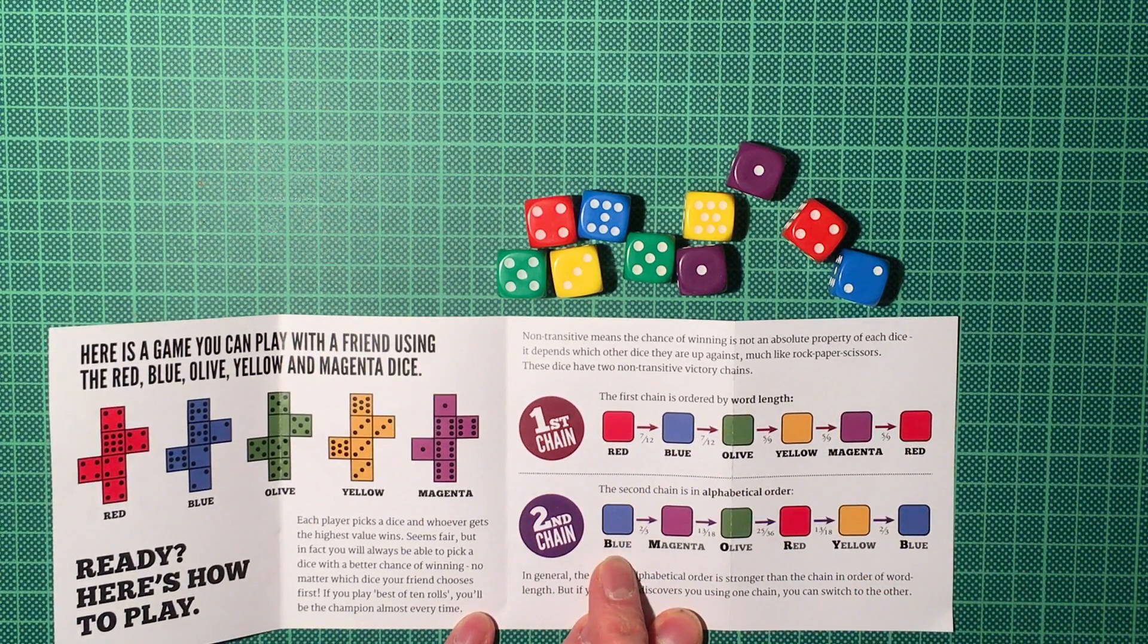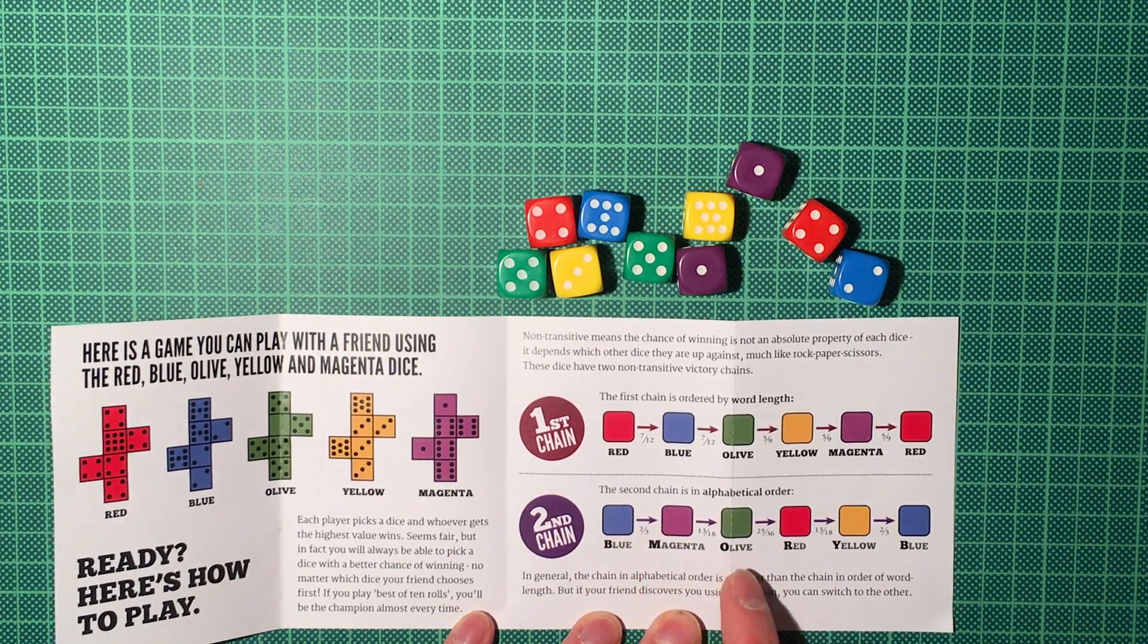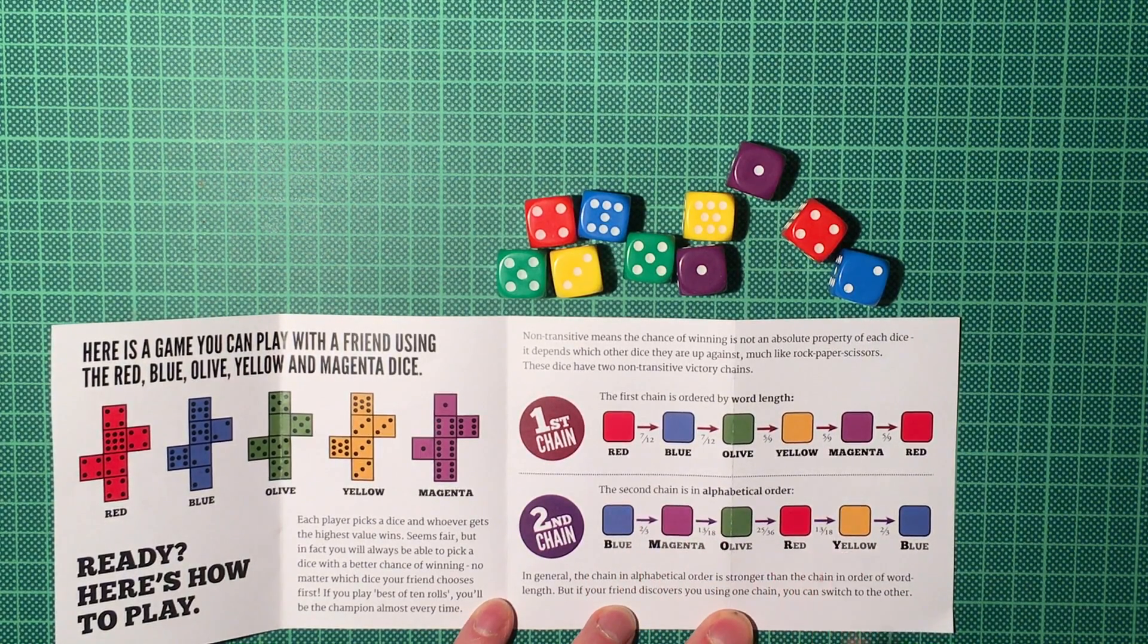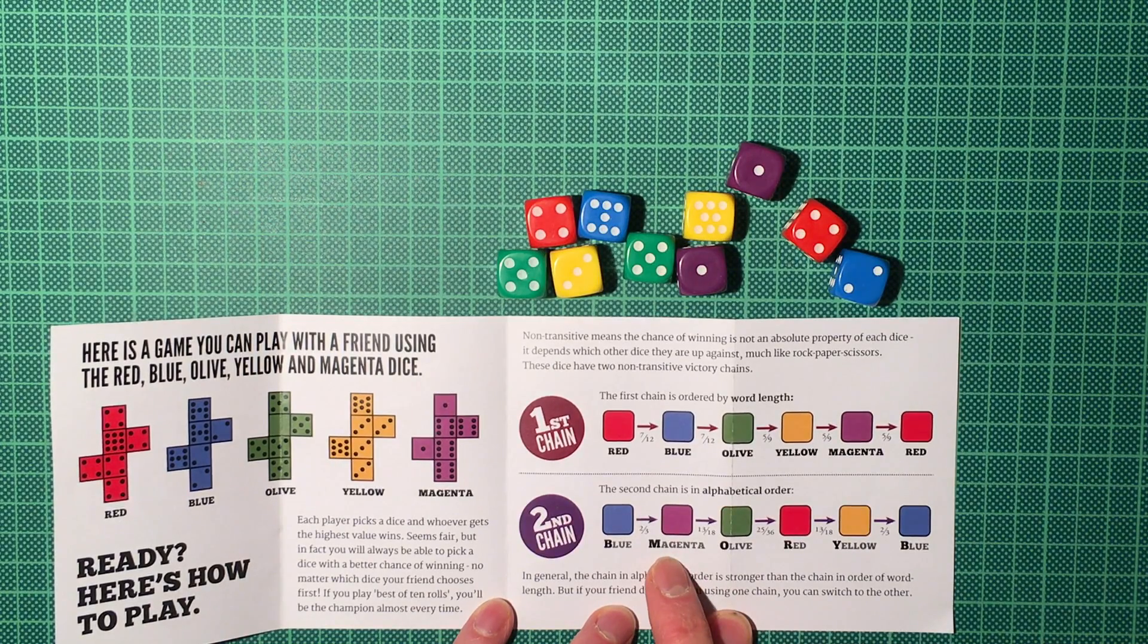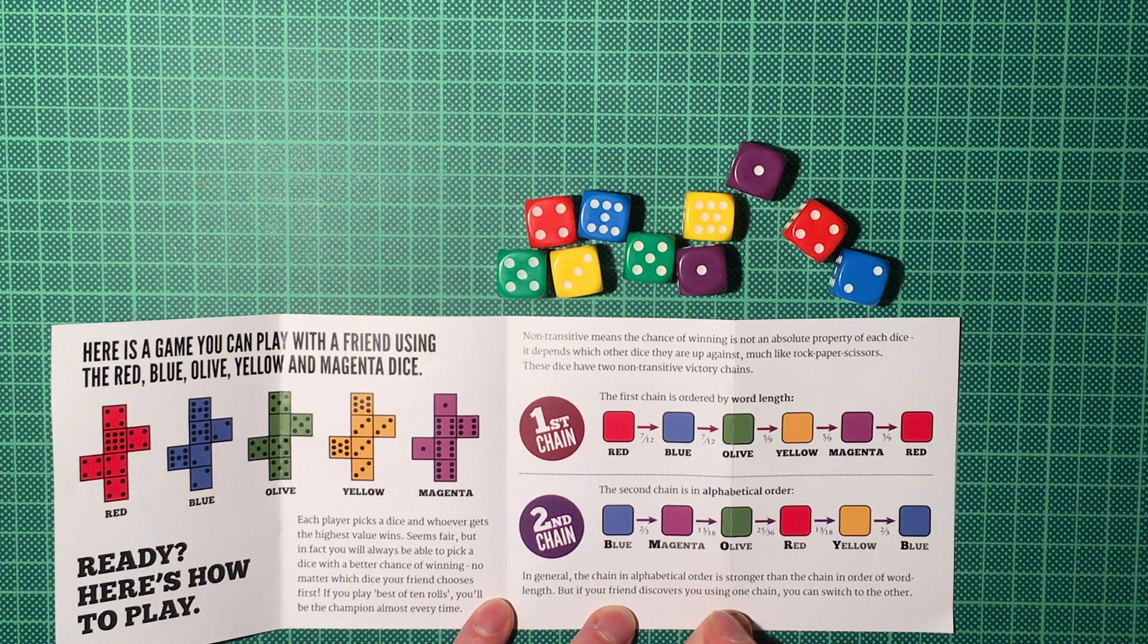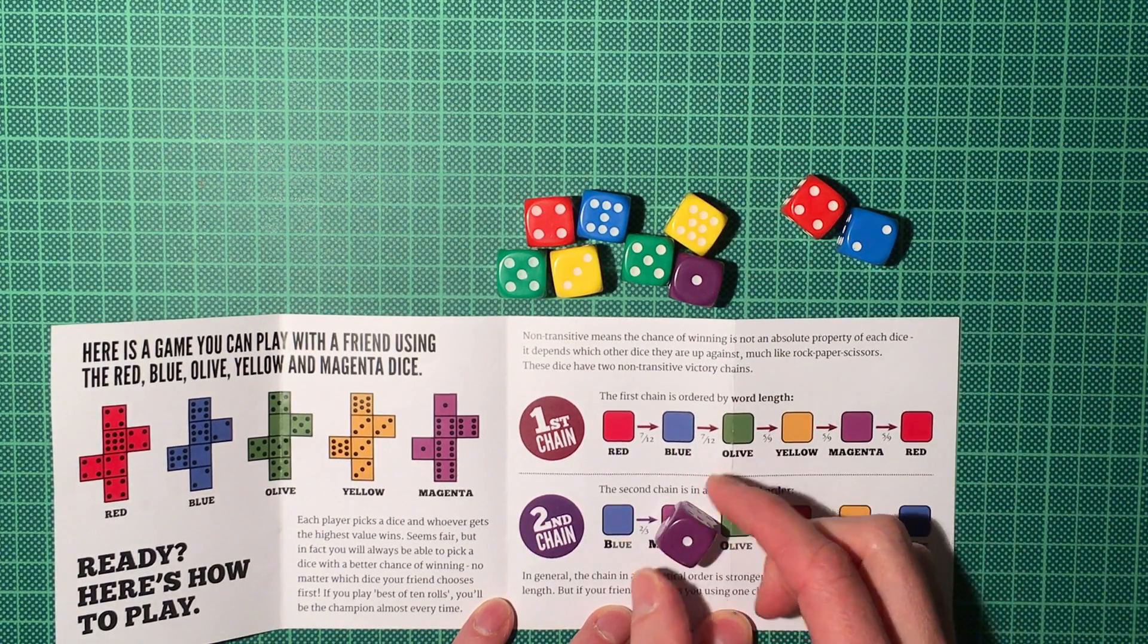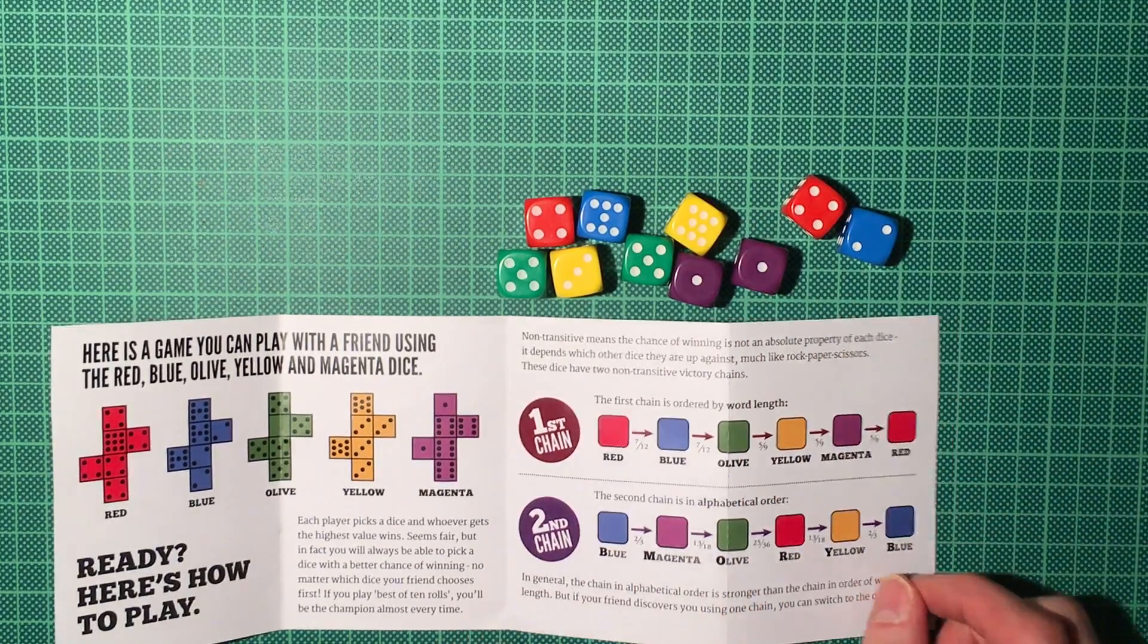There's also a second chain, which is in alphabetical order. Blue, magenta, olive, red, yellow. And that's probably also why they call this here magenta and not purple, because then it wouldn't fit anymore. Because honestly, this is not magenta. This is definitely purple.